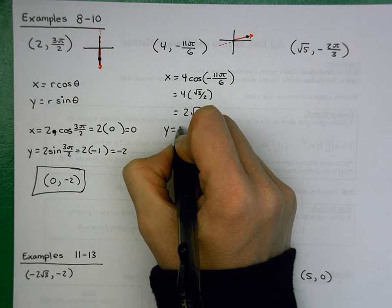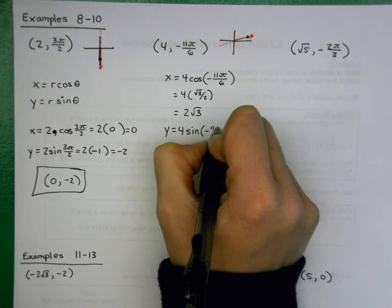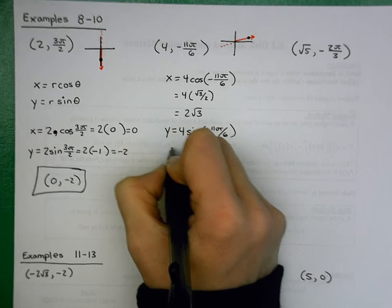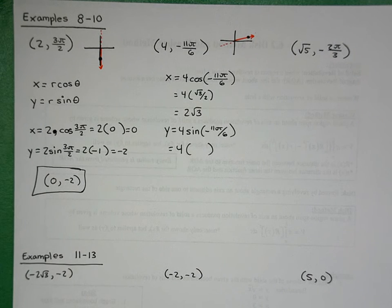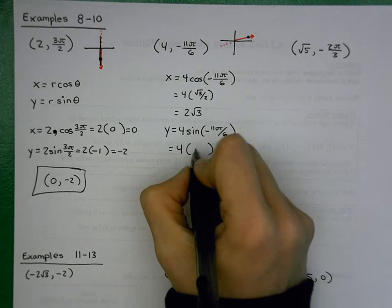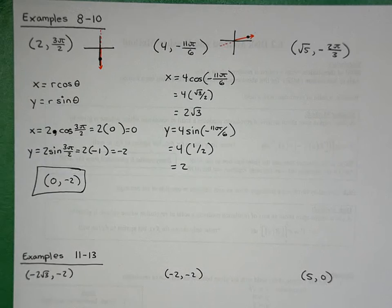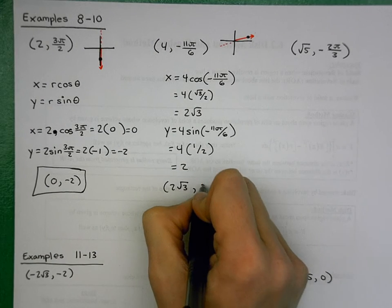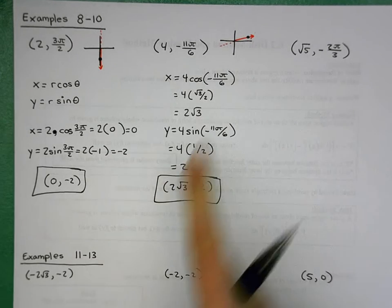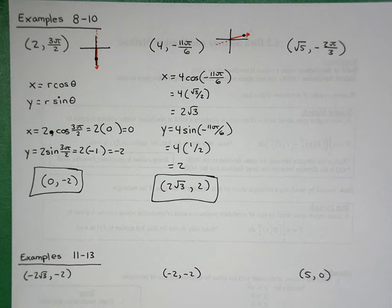For y = r·sin θ = 4·sin(−11π/6). What's the sine of −11π/6? That's in the first quadrant — it corresponds to π/6, giving sine = 1/2. So 4 times 1/2 is 2. My rectangular coordinate is (2√3, 2). Does that make sense with my sketch? 2√3, 2 would be in the first quadrant, so yes, that makes sense.